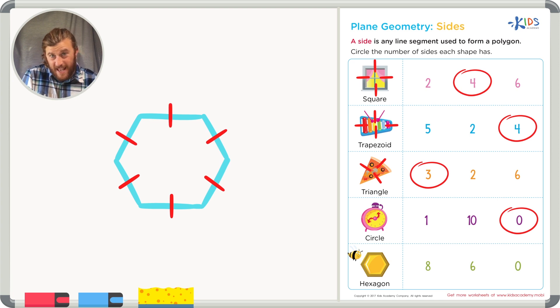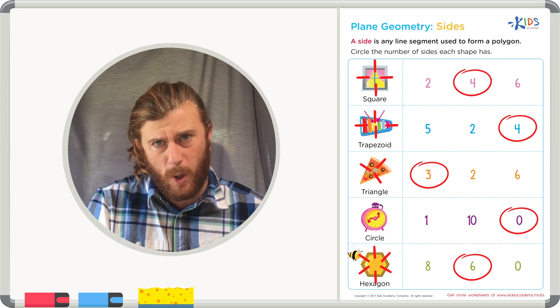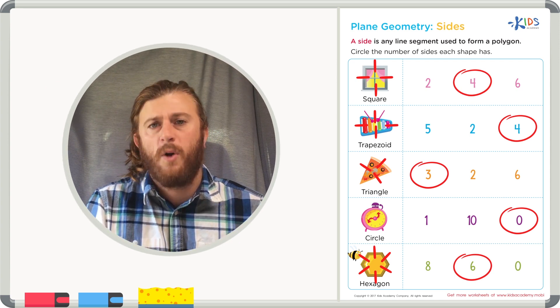And the hexagon on the worksheet has one, two, three, four, five, six sides. I think a hexagon is a six-sided shape or a shape with six sides.